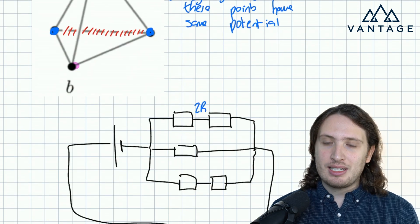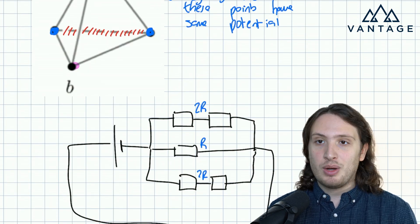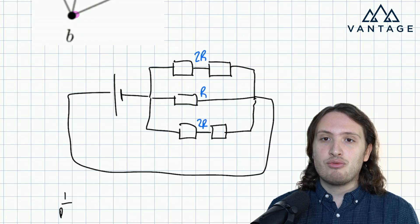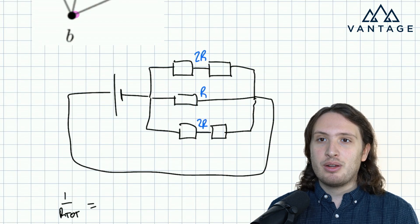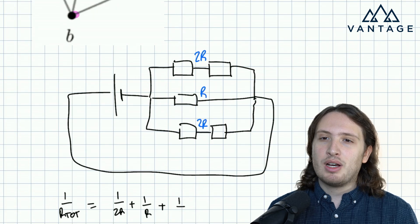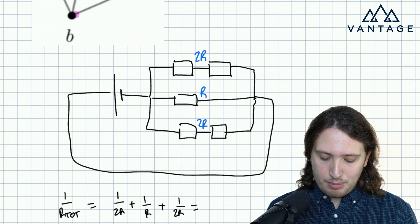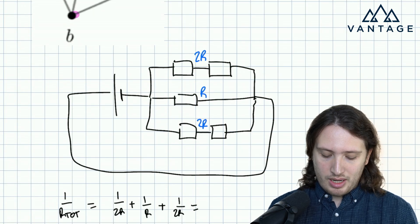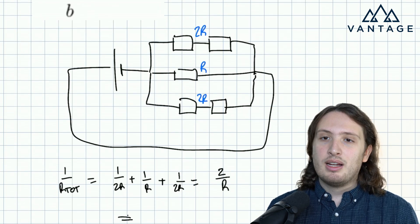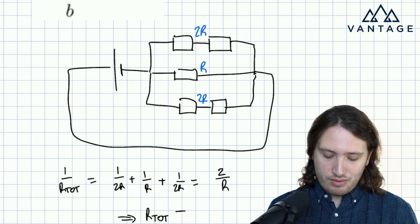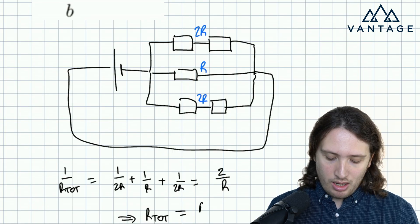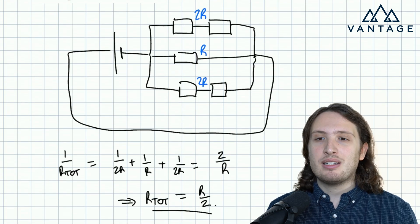This branch clearly has resistance 2R, this has R, and this has 2R, because resistances simply add in series. Using the rule for the addition of resistance in parallel, the reciprocal of the total resistance is the sum of the reciprocals along each branch. So I get 1 over 2R plus 1 over R plus 1 over 2R, which gives two lots of a half, so 1 over R, plus another 1 over R — that's 2 over R overall. Reciprocating both sides, R_tot is simply R over 2, half the resistance of one of the individual wires.